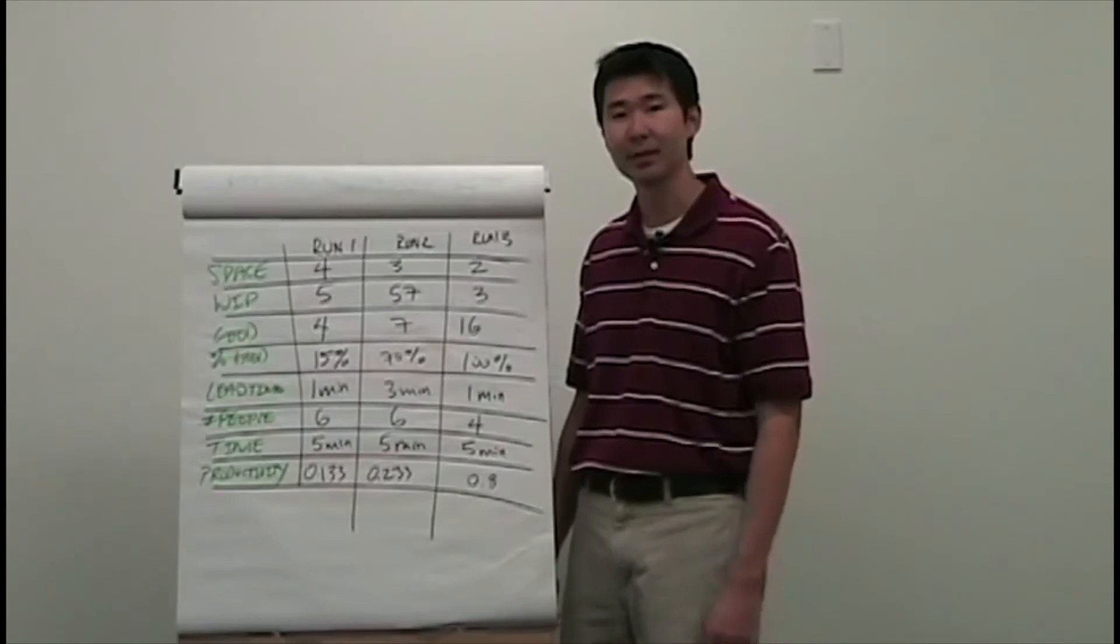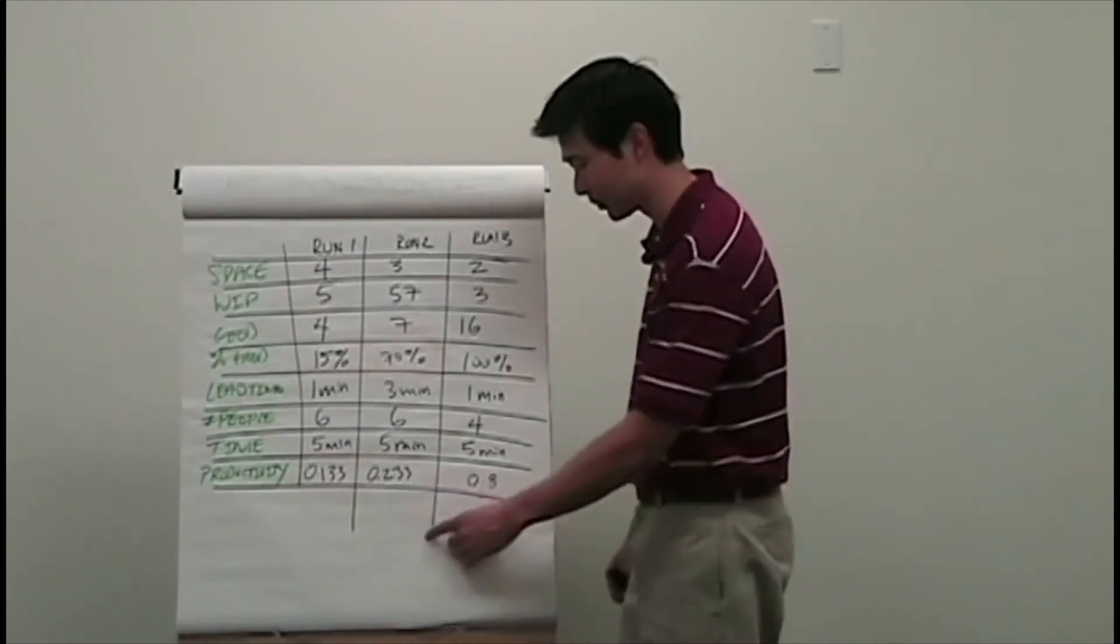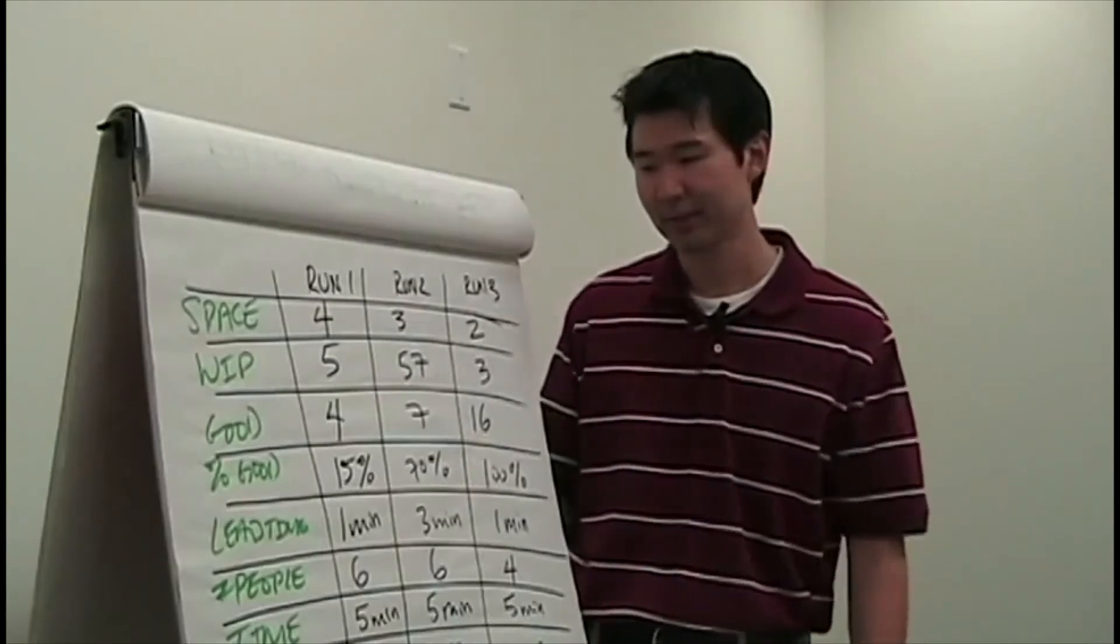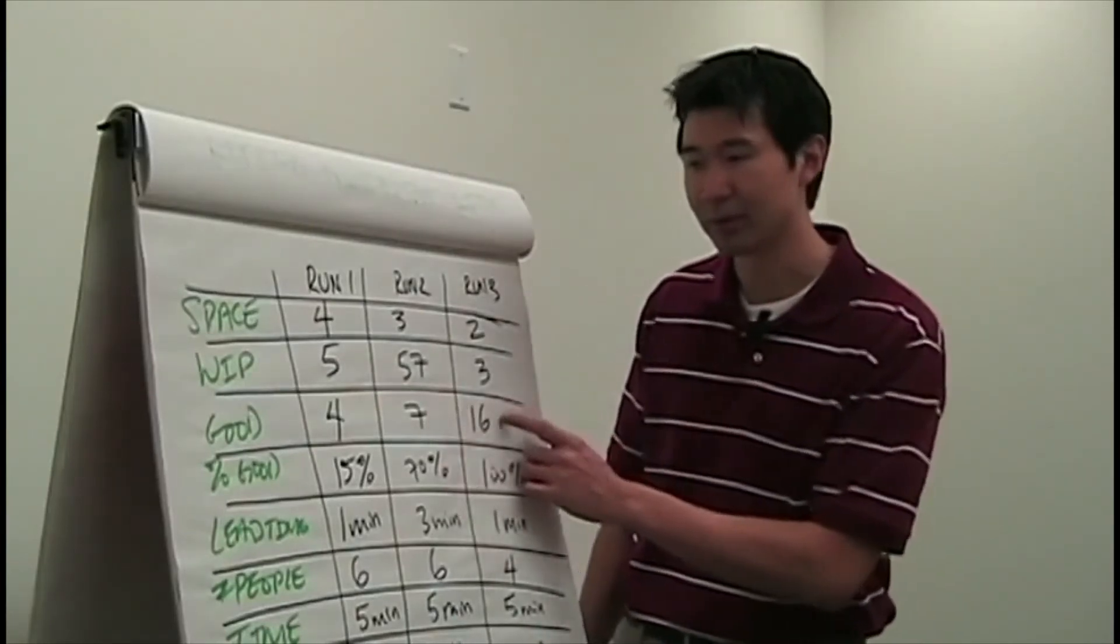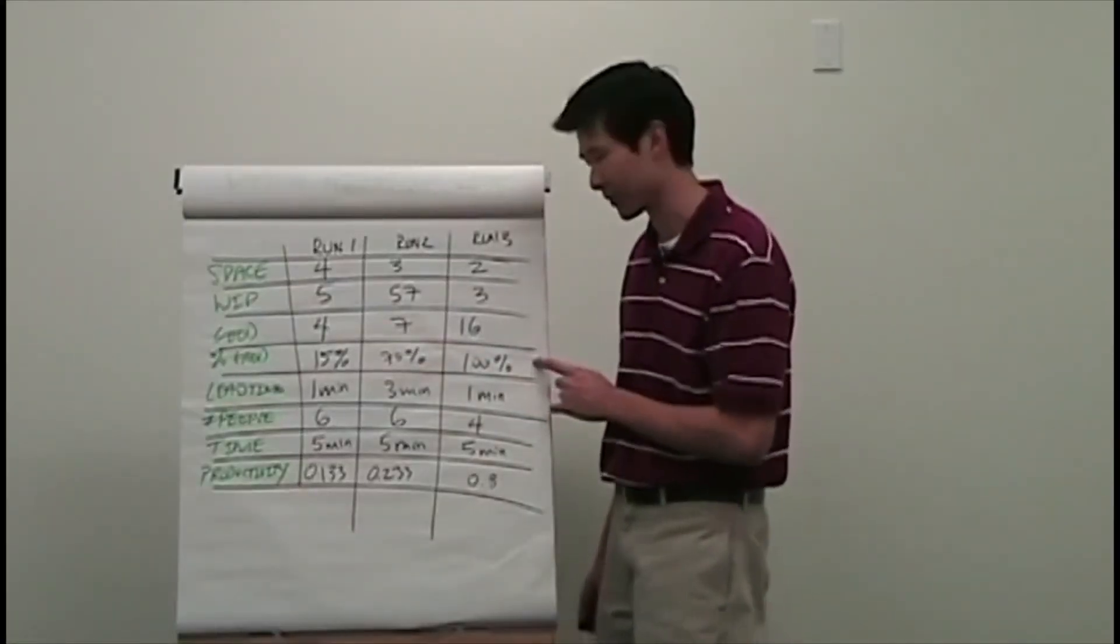So you can see that even though they were working at a slower pace, by pulling and pacing, they were actually able to more than triple their productivity. They also were able to more than double the amount of good planes that they built. And their quality was impeccable. 100%.